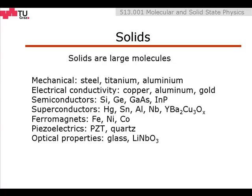Semiconductors like silicon, germanium, gallium arsenide, or indium phosphide are used in electronics, solar cells, and light-emitting diodes.